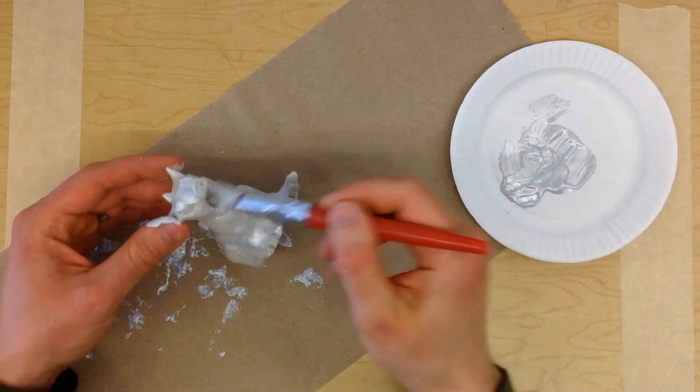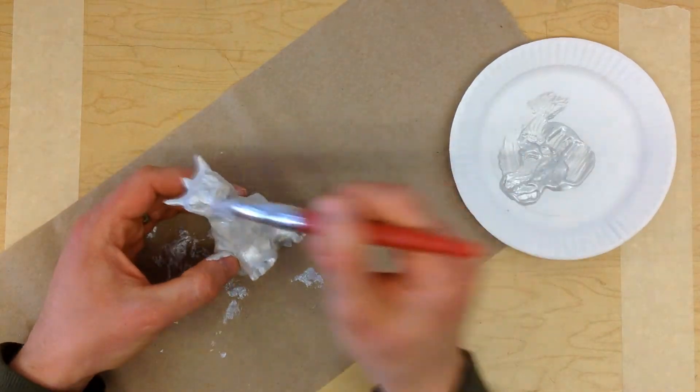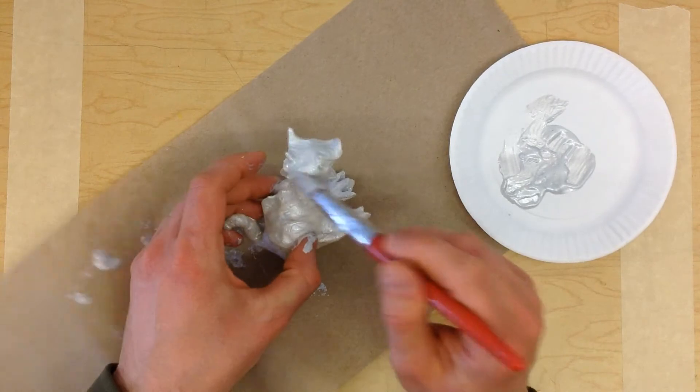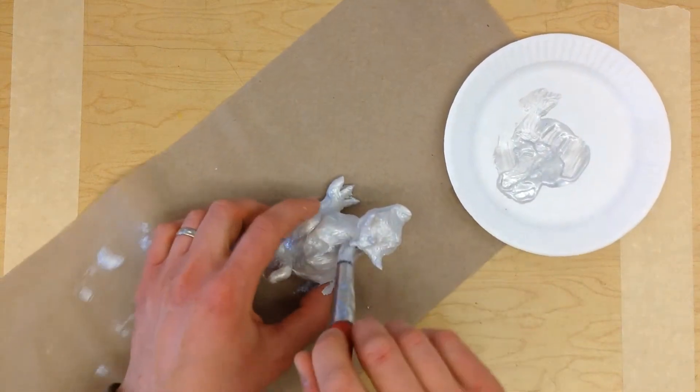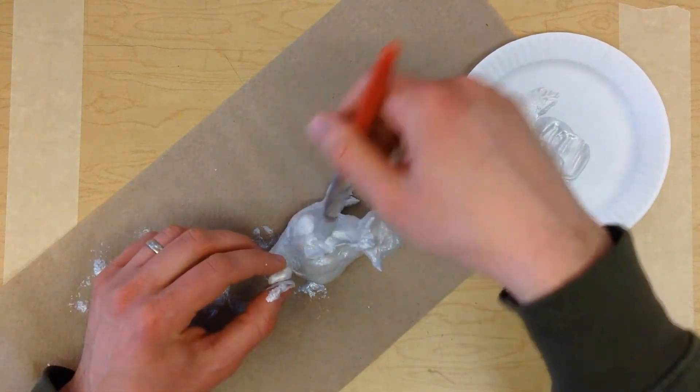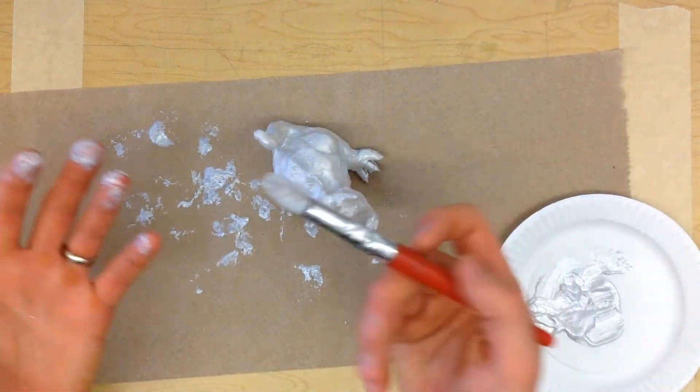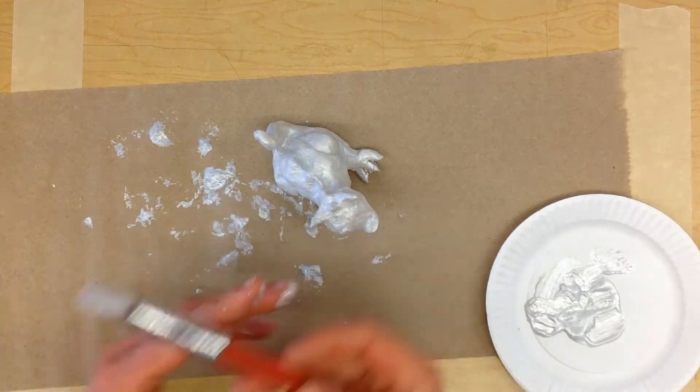You really want to get everywhere when you do this, so make sure you poke the brush into all the little holes for the mouth and eyes. Make sure you cover every little area of clay, and when it's done we'll set this aside to let it dry completely. Now I'm going to wash my hands and brush really well.